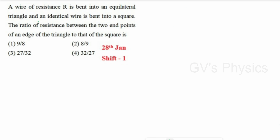Sixth question: A wire of resistance R is bent into an equilateral triangle, and an identical wire is bent into a square. Find the ratio of resistance between two vertices of an edge of the triangle to the square. For the equilateral triangle, each side is R/3. The two series sides give 2R/3, and this is in parallel with R/3.